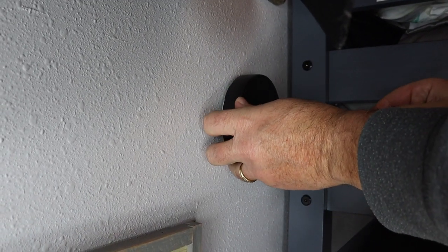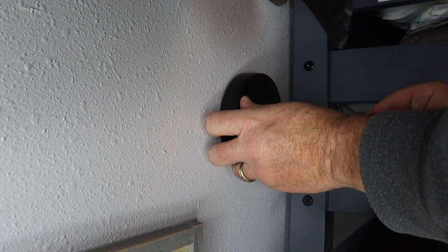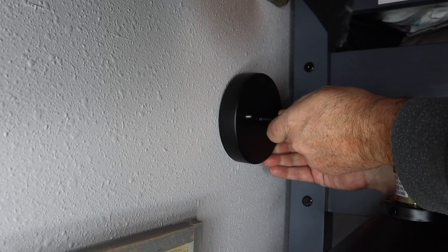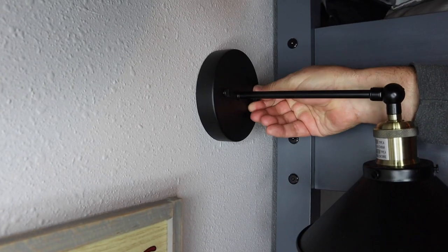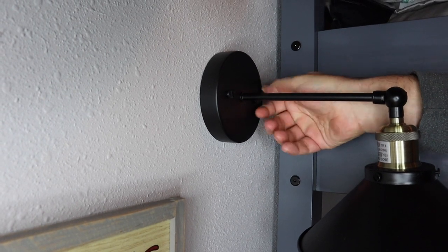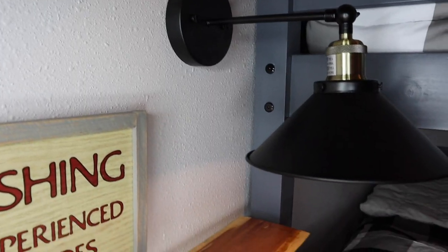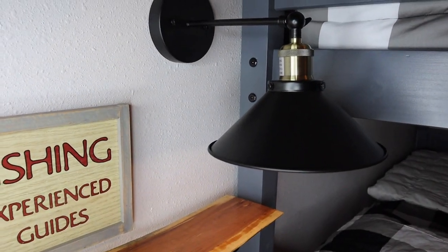And then we put the light fixture on here and fastened that with the brackets, which was super easy to do. I was so happy with this process. I feel like the overall look is really nice. You can't tell that it's not wired into the wall if this is the way you choose to do it.